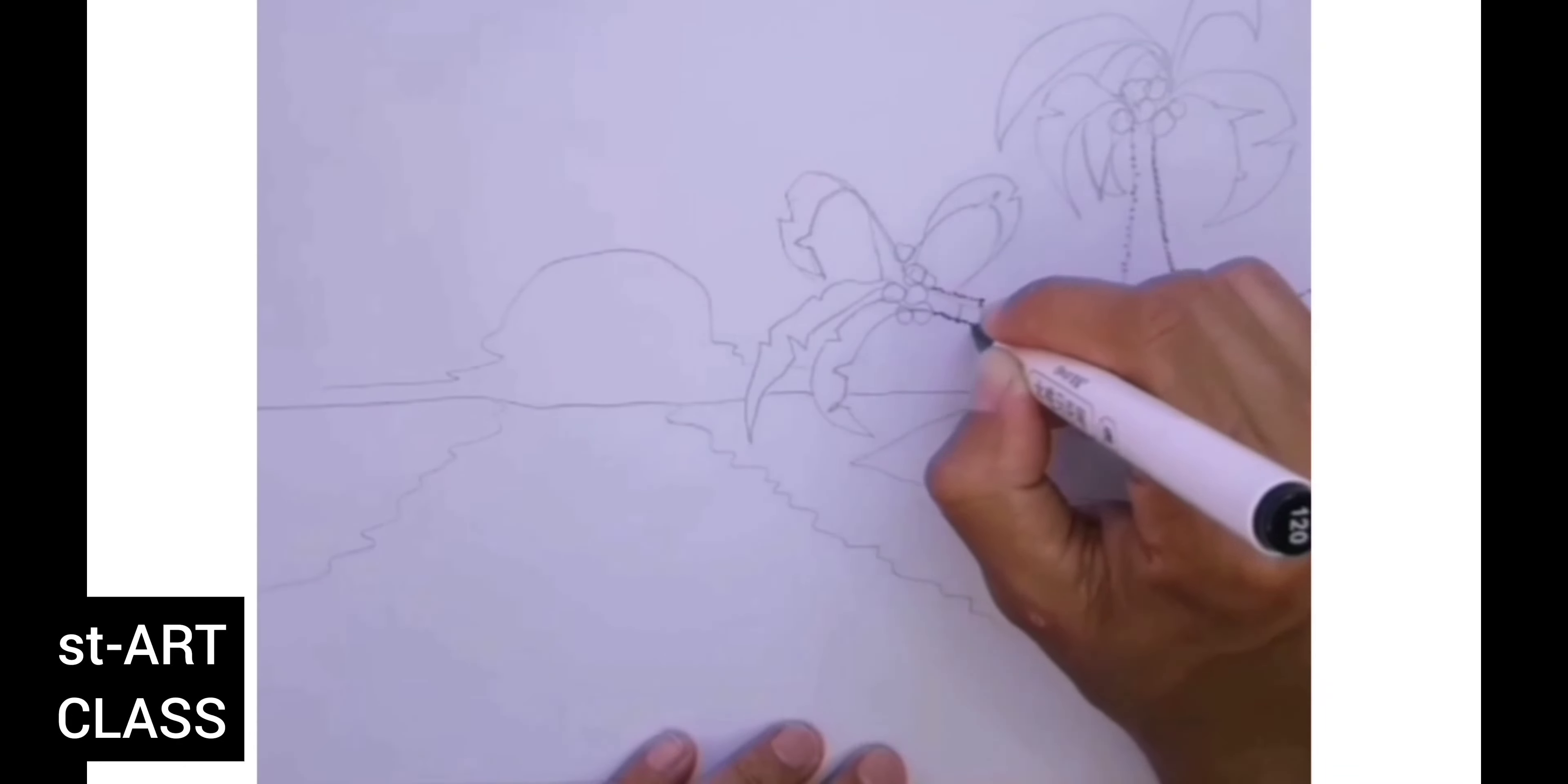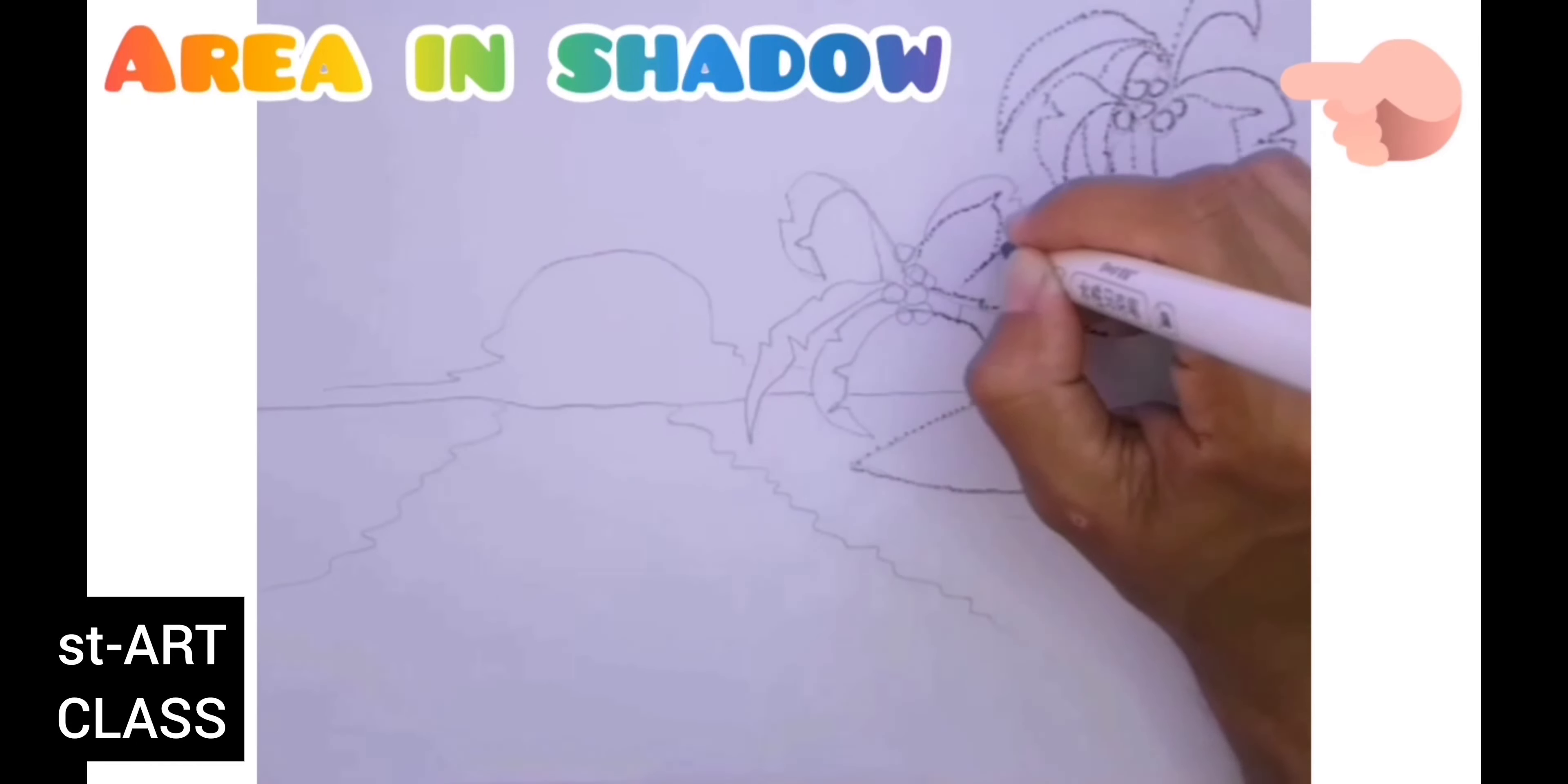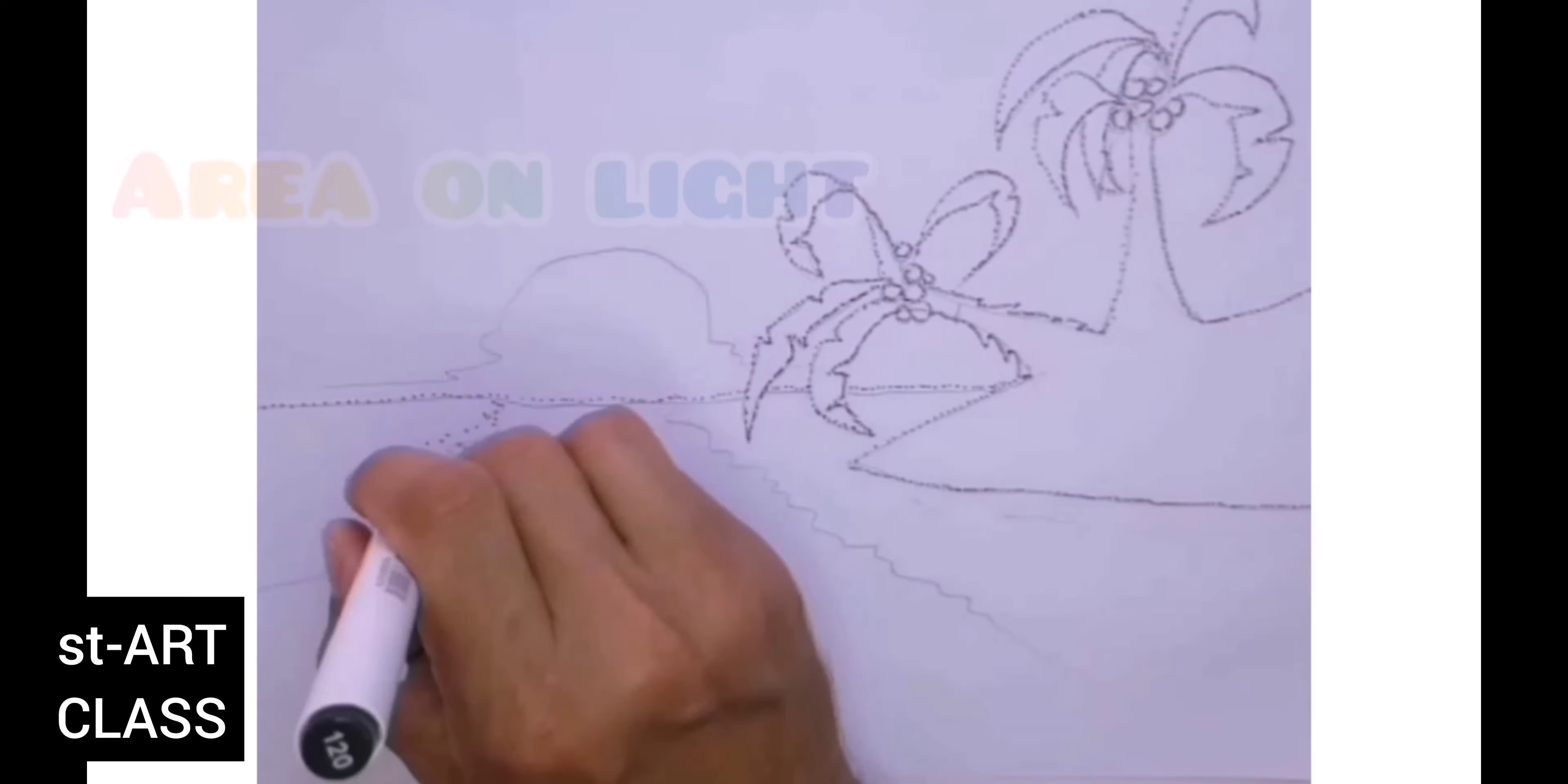When you outline your sketch with the black dots, you can put a thicker layer of black dots on the side where there is shadow or darker area, and the least dots on those edges which are exposed to your light source in the artwork.